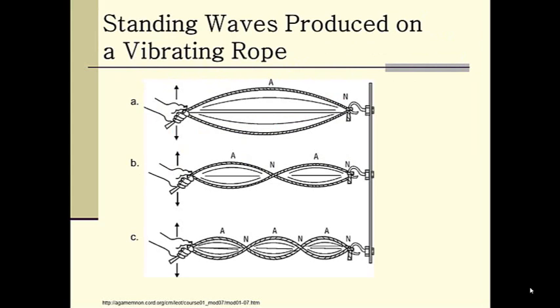Standing waves are produced by shaking a rope. If you look at the diagram, as the frequency of shaking your hand to create the waves increases, the wavelength decreases. Remember that wavelength and frequency are inversely proportional. Twice the frequency decreases the wavelength by half. Three times the frequency decreases the wavelength by a third. The lowest frequency of vibration, which produces a standing wave, is called the fundamental frequency, and is shown in diagram A.